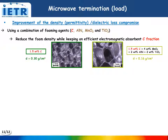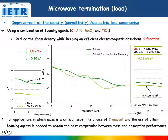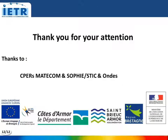Moreover, to improve the compromise between density and electromagnetic properties, a combination of foaming agents can be used in order to reduce the density while keeping electromagnetic absorption. Photos of samples made first with only carbon and second with a mixture of foaming agents are presented here. This last sample presents very low permittivity while maintaining high levels of losses, which induces high absorption performance. This allows obtaining the best compromise between mass and shielding efficiency.